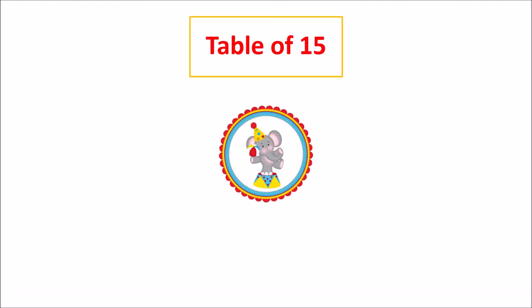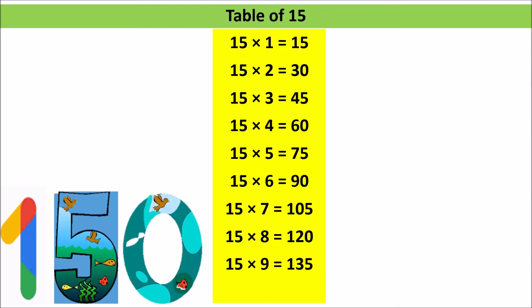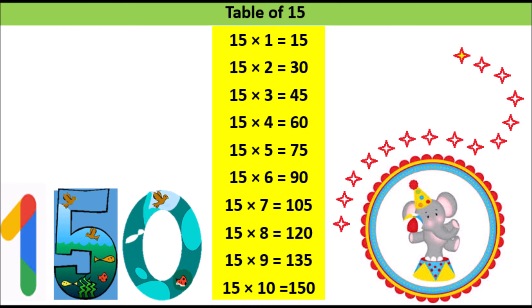Table of 15. This is the last one, so don't quit. Come on, give it a push. 15 1s are 15, 15 2s are 30, 15 3s are 45, 15 4s are 60, 15 5s are 75, 15 6s are 90, 15 7s are 105, 15 8s are 120, 15 9s are 135, 15 10s are 150.